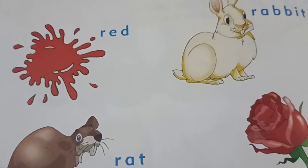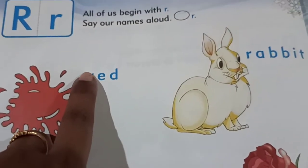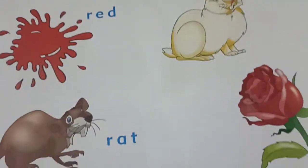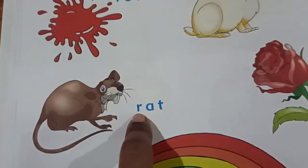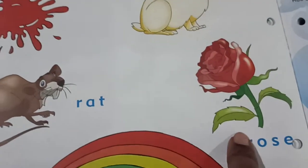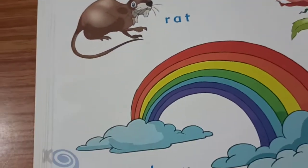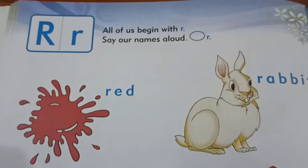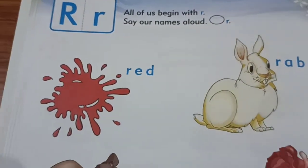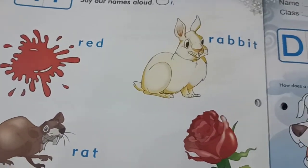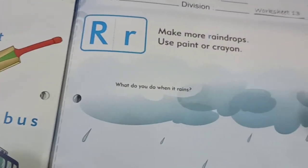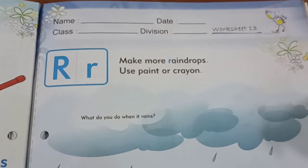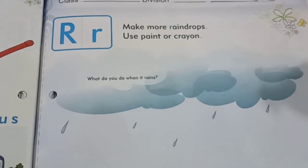So what you are going to do is circle the letter R wherever the letters begin with R — just circle the R. This is the activity for today in the English worksheet. Children, please complete this. Parents, please help your child to complete this worksheet. Thank you, parents. Thank you, children.